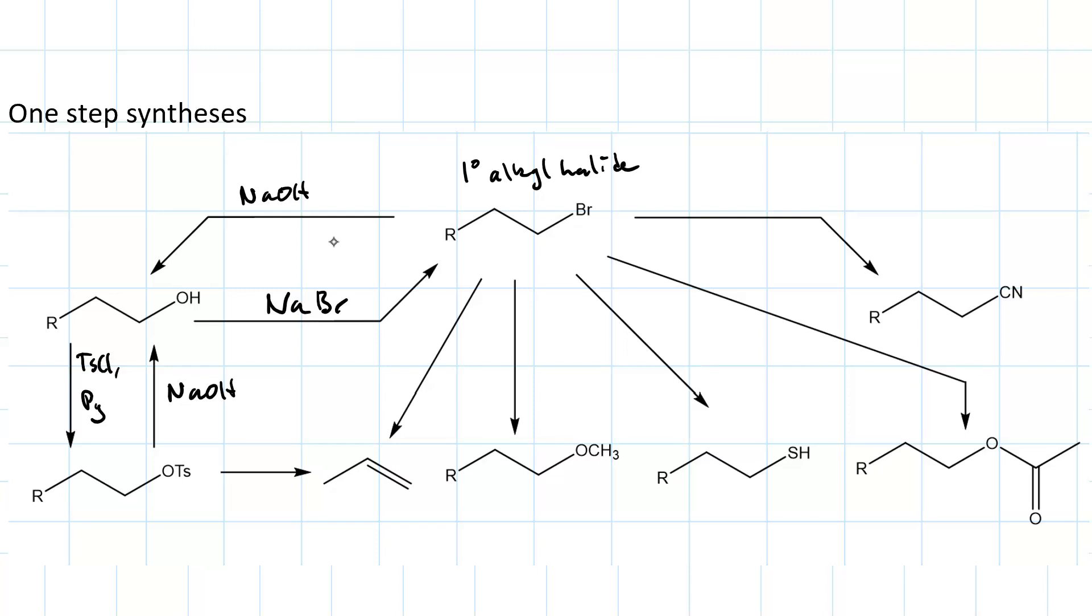Here, to do an elimination reaction, we'd want to use tert-butoxide. Even though SN2 dominates, tert-butoxide is too sterically hindered to perform a substitution reaction, so we get the alkene. We could also do this directly from the primary halide to get to the alkene.